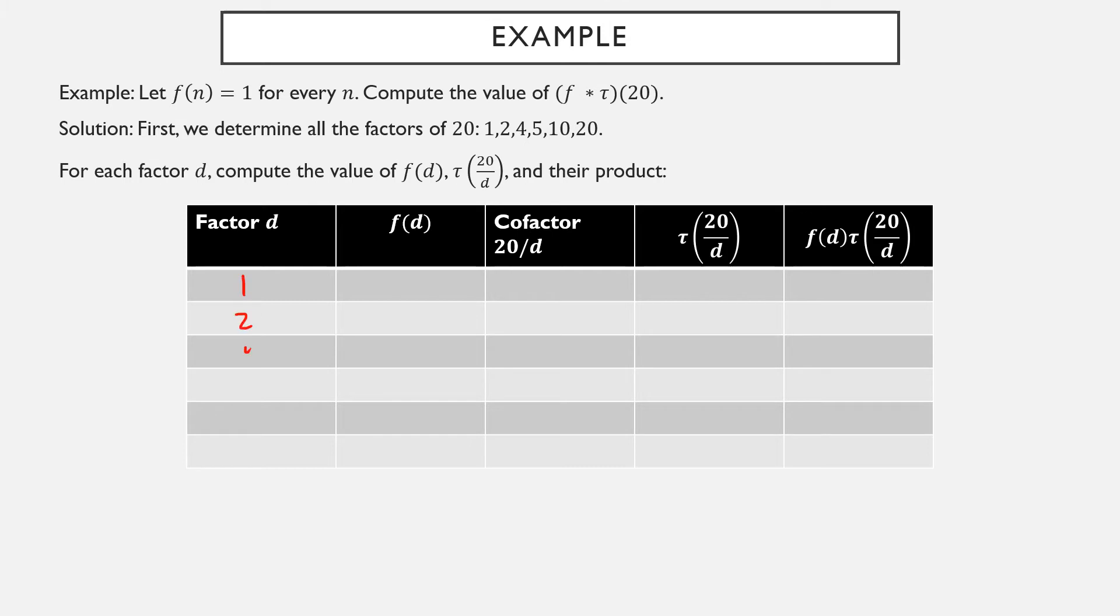Our factors are 1, 2, 4, 5, 10, and 20, with cofactors 20, 10, 5, 4, 2, and 1. f(n) is just 1, regardless of what we plug in. Tau, however, is the number of positive factors. So the number of positive factors of 20 is 6. We just computed them. The positive factors of 10 are 1, 2, 5, and 10. There were 4 of them. The positive factors of 5 are 1 and 5, and there are 2 of them. The factors of 4 are 1, 2, and 4. That's 3 of them. The positive factors of 2 are 1 and 2, so there were 2 in total. And the positive factors of 1 are just 1, so there was only a single positive factor.